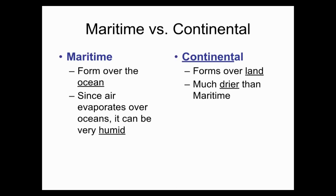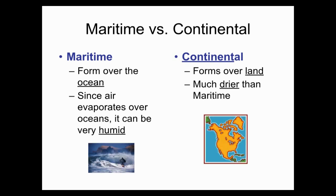Maritime versus continental helps us decide where the air mass forms and whether it's going to bring warm or dry weather. Maritime forms over the ocean, and since the air evaporates over the oceans, this type of weather is going to be very humid. Continental forms over the land and is going to be much drier than a maritime air mass.